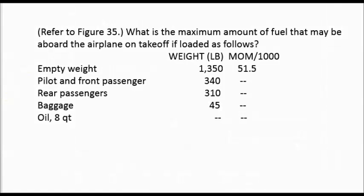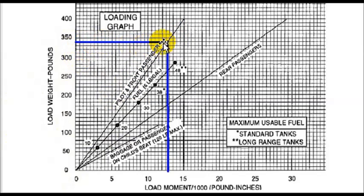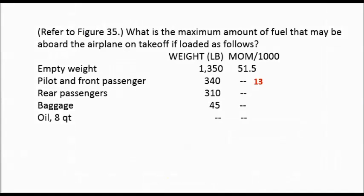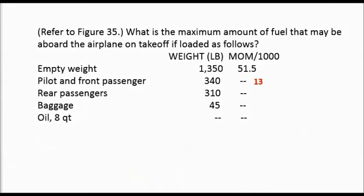For the pilot and front passenger: 340 pounds. We come into the graph at 340. We want the pilot and front passenger line. We come across at 340, then come directly down, and we get a load moment of 13. So 13 is our load moment for the pilot and front passenger.